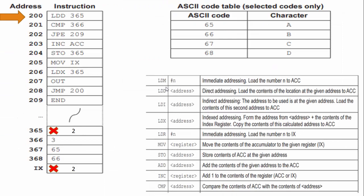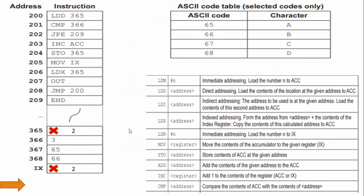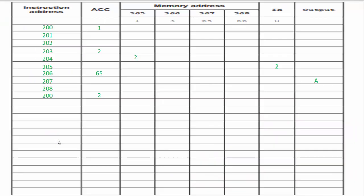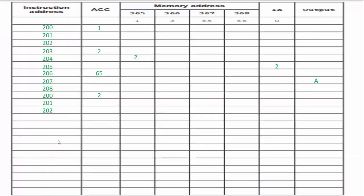This is why we crossed out the old value — because the new value was updated to two. So we're going to load two to the accumulator. Line 200 runs, two is loaded. Now we look at CMP 366: comparing the accumulator, which was two, with the contents of address 366. Two is not equivalent to three, but the compare instruction ran — I document 201. Line 202: we jump if the compare is equal. Two is not equivalent to three, so there is no jumping, but that instruction did run — I document 202.